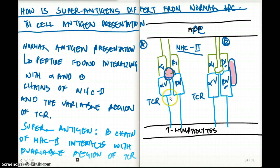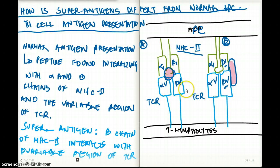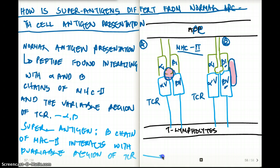Here I've made a quick summary of how MHC class 2 and the T cell receptor work in normal antigen presentation and how it differs from superantigens. In normal antigen presentation, the peptide is found interacting with the alpha and beta chain of MHC class 2 and the variable alpha and beta region of the T cell receptor. In superantigens, it is the beta chain of MHC class 2 that interacts with the beta variable chain of the T cell receptor, and there is no antigen presentation in superantigens.